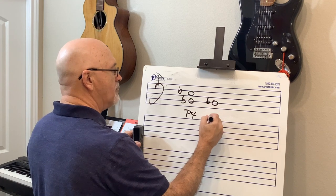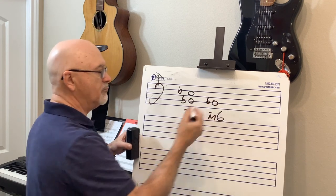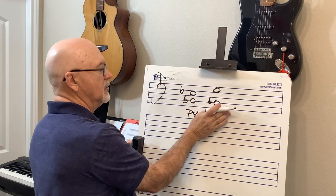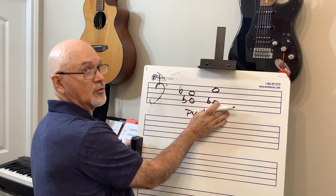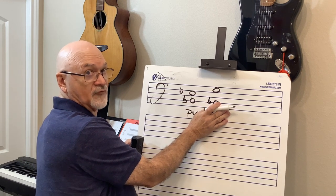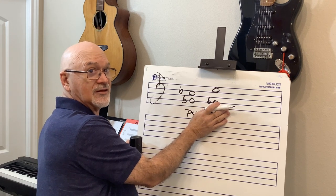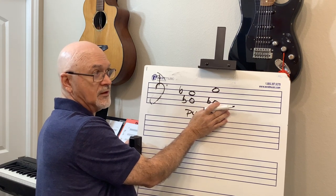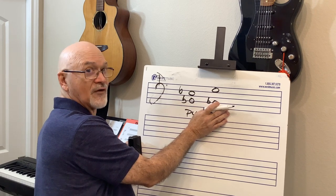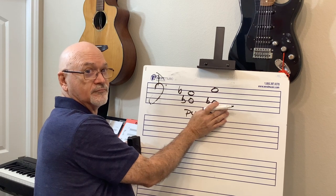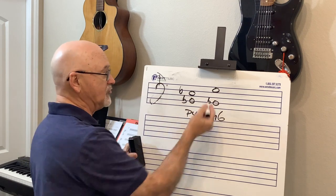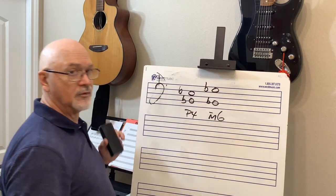What is a minor sixth from B-flat? The major sixth in the key of B-flat is G — the sixth note: B-flat, C, D, E-flat, F, G. But I want a minor sixth, so I reduce it by half a step. That gives me G-flat — there's my minor sixth.